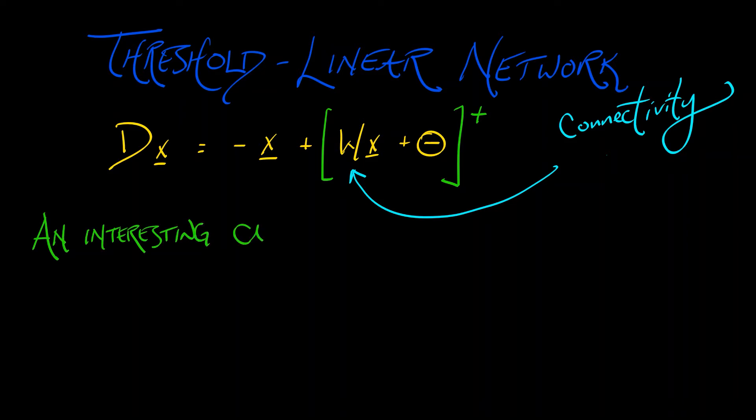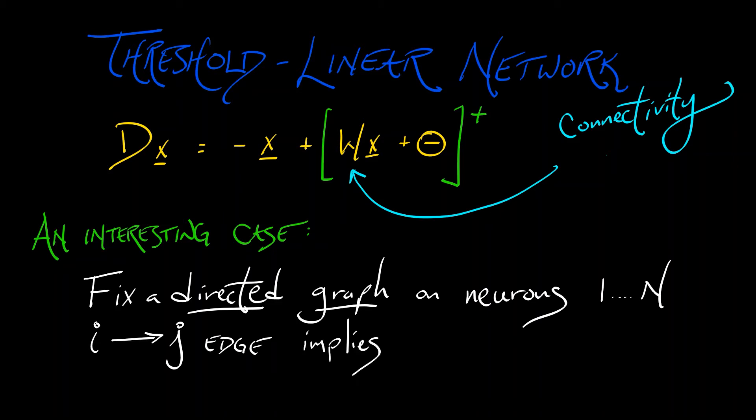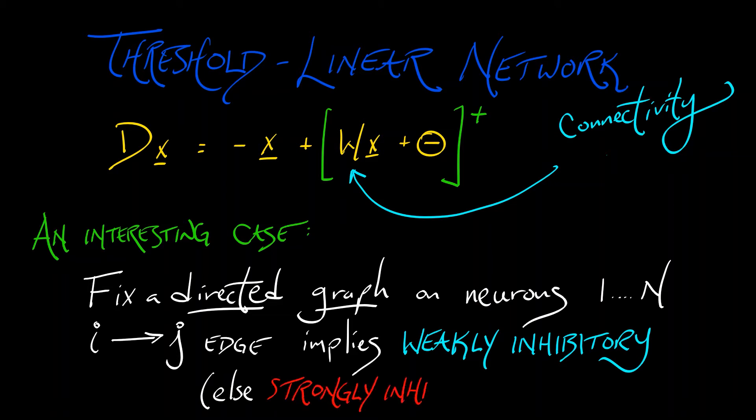If we fix a particular directed graph on this collection of neurons, one through n, then what we're going to do is whenever there's an edge from i to j, that is going to imply a weak inhibition, a weakly inhibitory dynamics. But if there's not an edge from i to j, then that is going to imply strongly inhibitory connection.